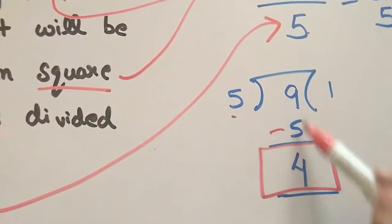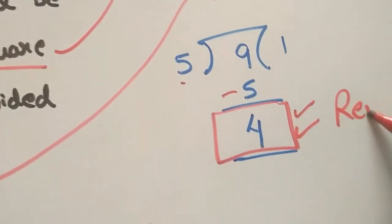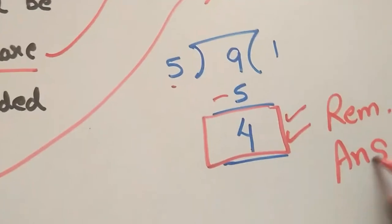5 into 9 gives 1, and difference is 4. So this is the remainder and this is actually your answer.